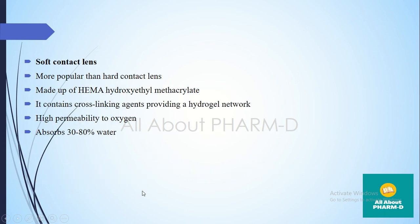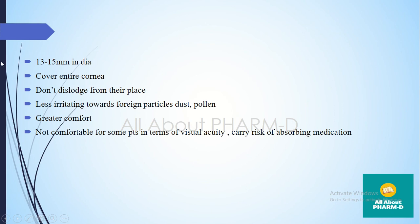Soft contact lenses are more popular because of comfort level. The material is hydroxyethyl methacrylate (HEMA), which contains a cross-linking agent and forms a hydrogel network. It is highly permeable to oxygen, allowing the cornea to breathe. It covers the entire cornea, all layers, and does not dislodge easily — displacement is very low and less irritating, even in the presence of dust or pollen.